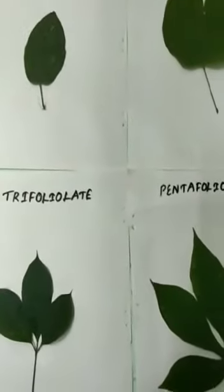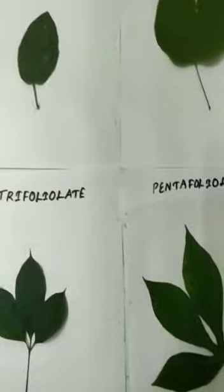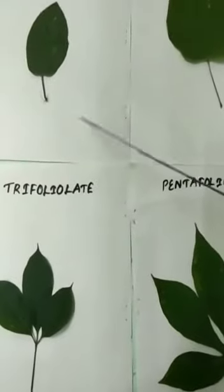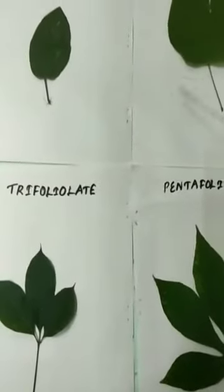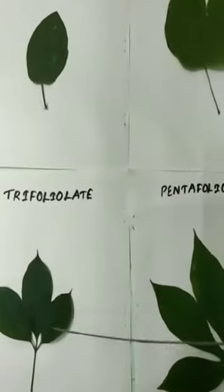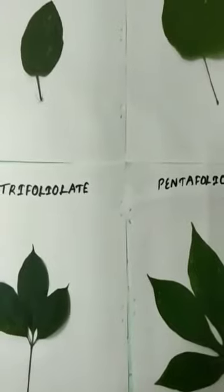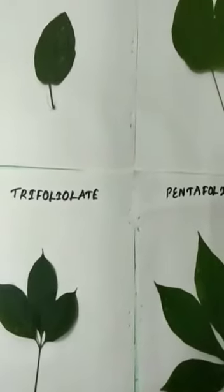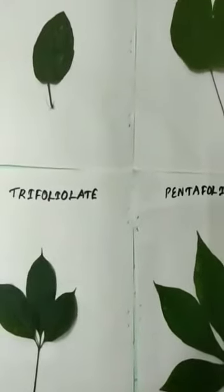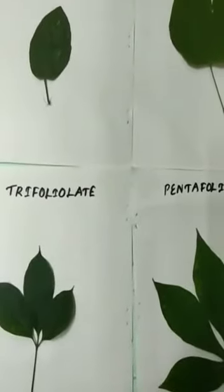What are the types of palmately compound leaves? They are: unifoliolate, bifoliolate, trifoliolate, pentafoliolate, and multifoliolate.